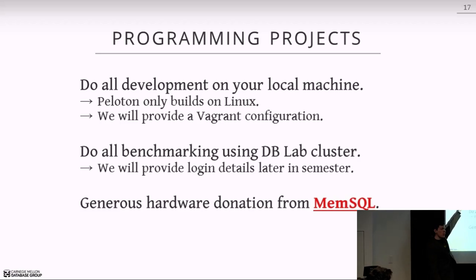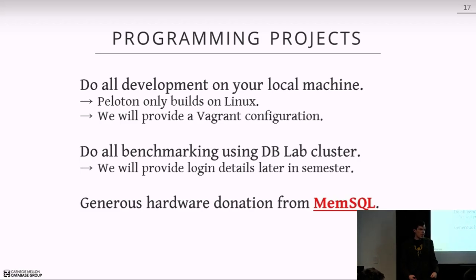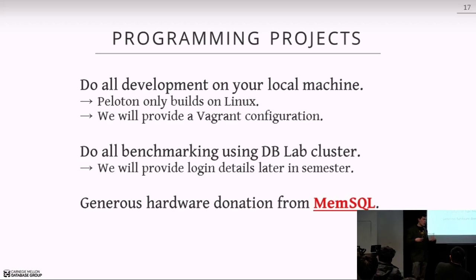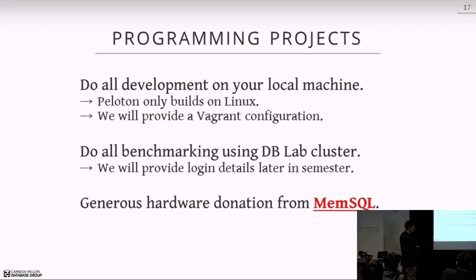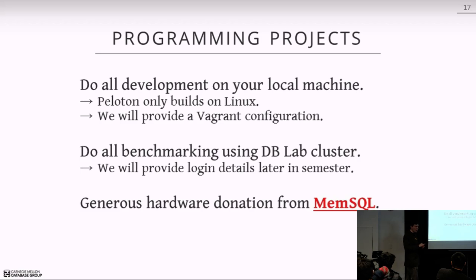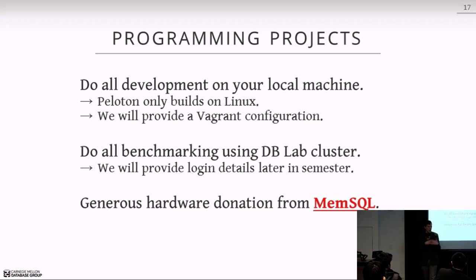For the programming projects, you want to do all development on your local machine. Unfortunately, Peloton only compiles and runs on Linux. We spent about a month last semester trying to make it work on OS X but couldn't get it to compile. So all development has to be done on Linux. To get around this, we'll provide a Vagrant configuration file — a Ubuntu virtual machine you can run on OS X or Windows — and you can do all your development inside that.